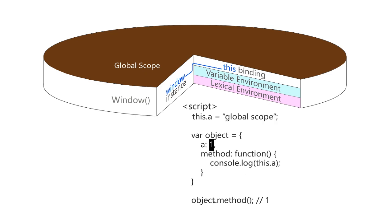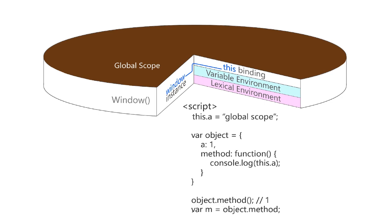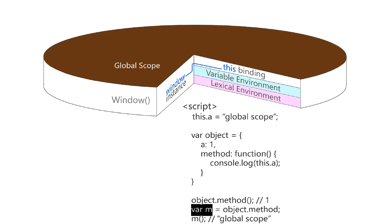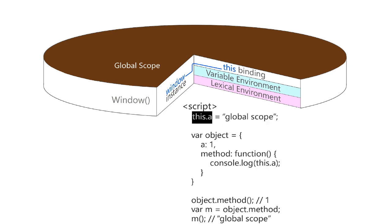That's because the method was not called from the global scope itself. On the contrary, notice that we created a new variable called `m` and assigned it the object method. But this method is now in the global scope, so when we actually call `m`, the result will not be 1 — it will be global scope. Because this method has been transferred into the global scope, the `this` context inside the function refers to the global scope variable rather than what we defined inside the object literal.